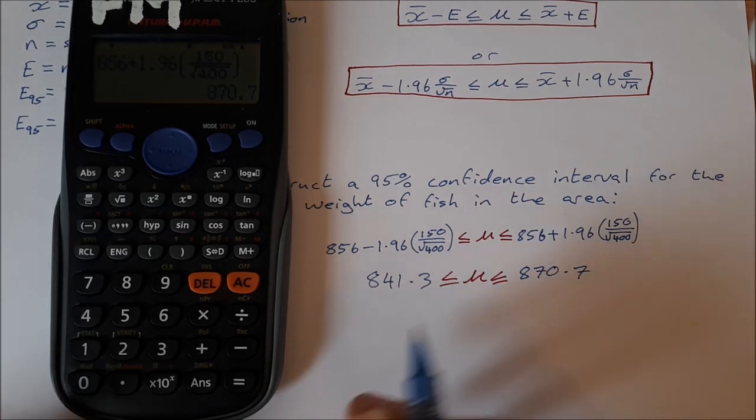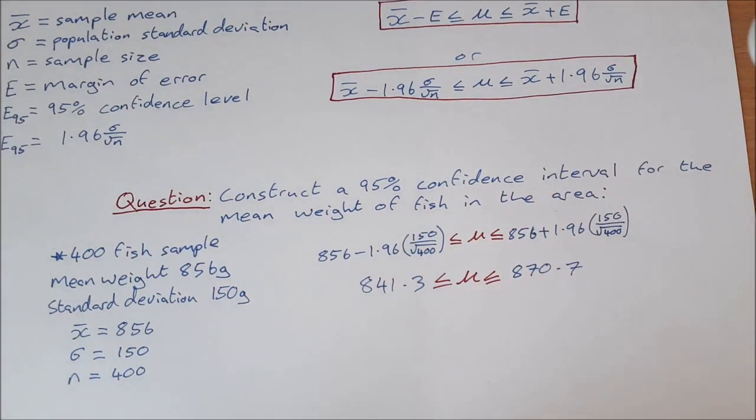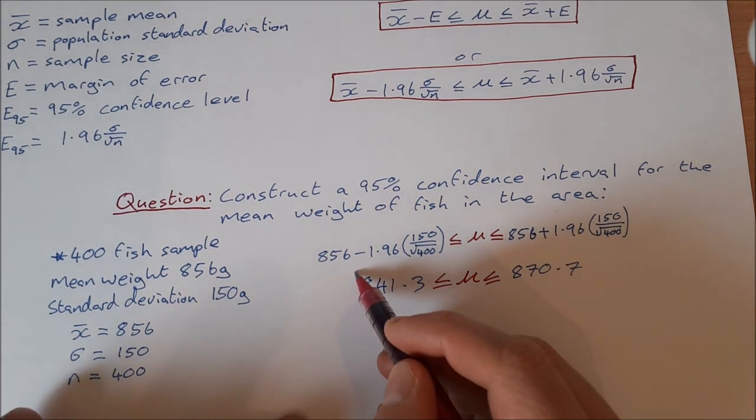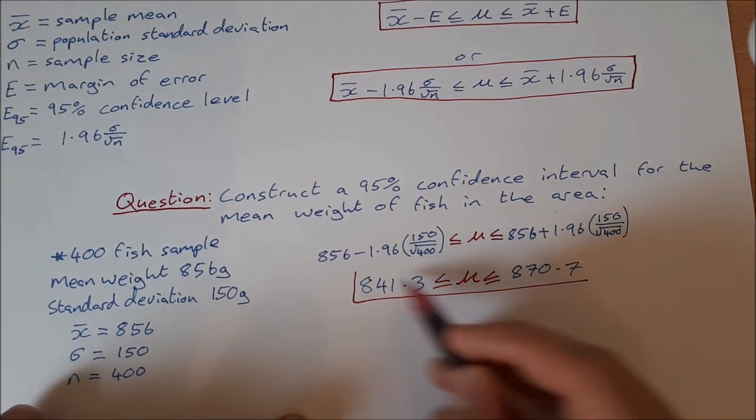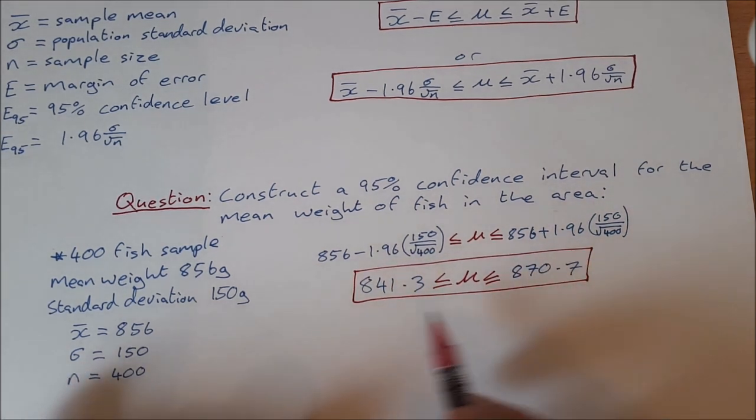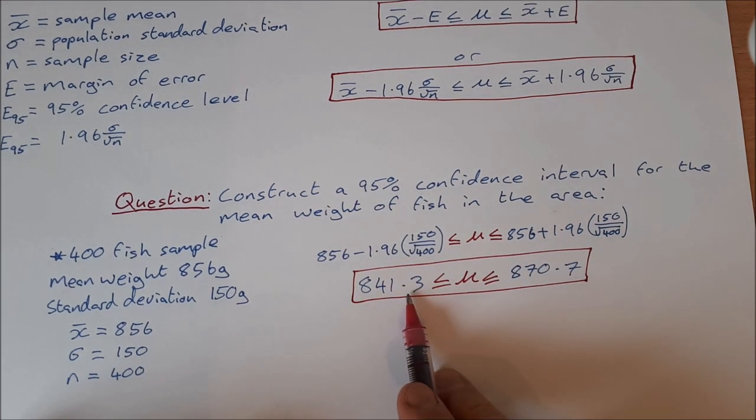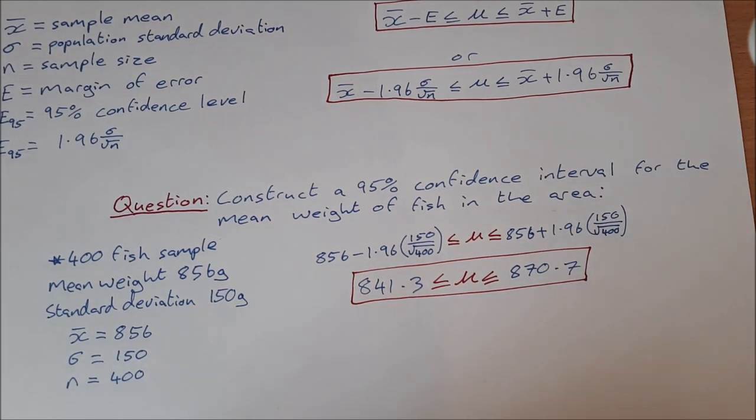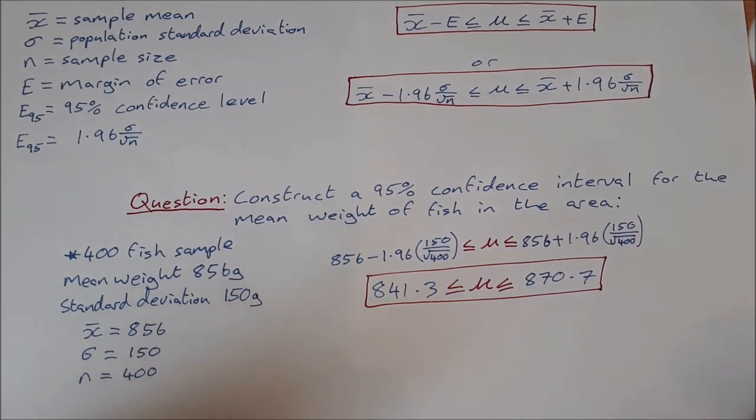So what does that mean? That means we are 95% confident that the mean weight of fish in this area lies between 841.3 grams and 870.7 grams. Okay, thanks for watching and I'll see you in the next video.